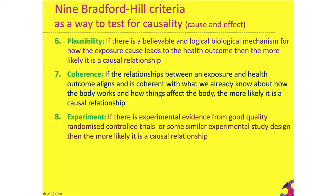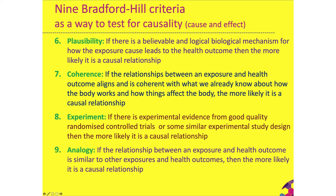Seventh, experiment — if there is experimental evidence from good-quality randomised controlled trials or similar experimental study designs, the more likely it is a causal relationship. Eighth, analogy — if the relationship is similar to other known exposure-outcome relationships, the more likely it is causal. These nine criteria are not used as a rigid checklist but as a way of thinking generally about the strength of evidence in relation to whether an exposure leads to a health outcome.